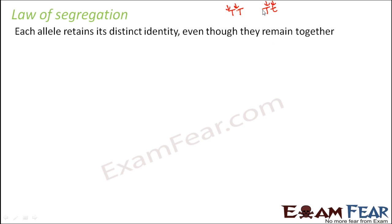Mendel said that if capital T comes with small t, they stay together because alleles do not exist singly — an allele pair forms the gene. But that doesn't mean capital T and small t will blend to form something new, like an intermediate trait between tall and dwarf. Nothing like that was happening. Each allele retained its own identity, and that is why in F1 they resembled one particular trait, and in F2 the dwarf plants exactly resembled the original parental dwarf.